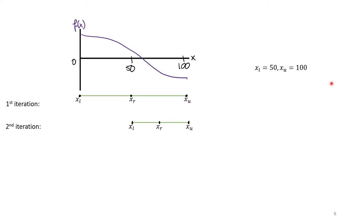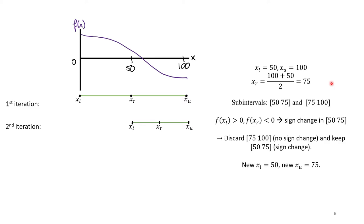For the second iteration, we split the interval 50 to 100 in half and assume that the root lies at the midpoint. We end up with two subintervals, 50 to 75 and 75 to 100. The interval 50 to 75 contains a sign change, so we'll work with this interval in the third iteration.